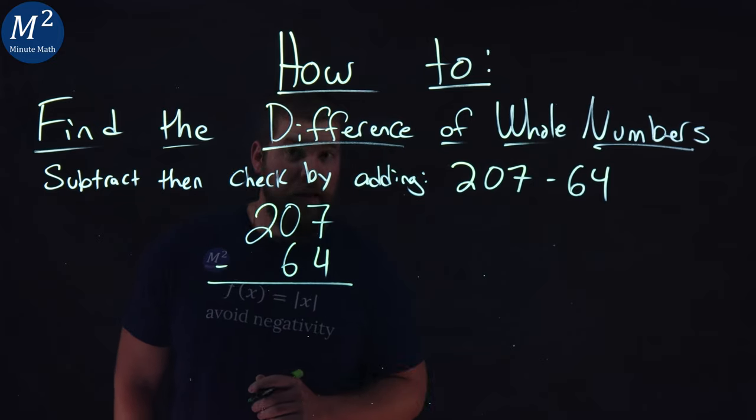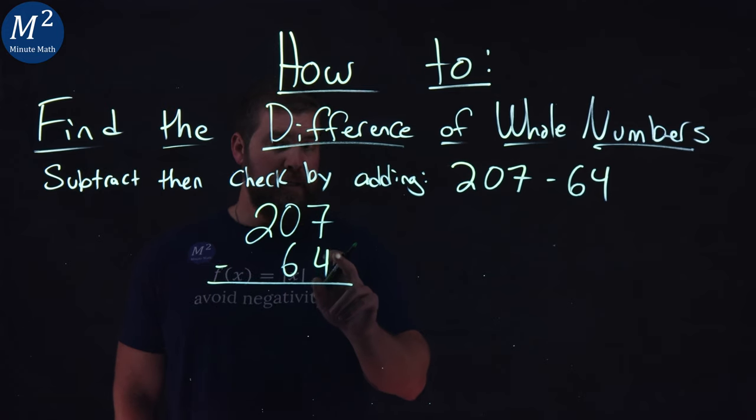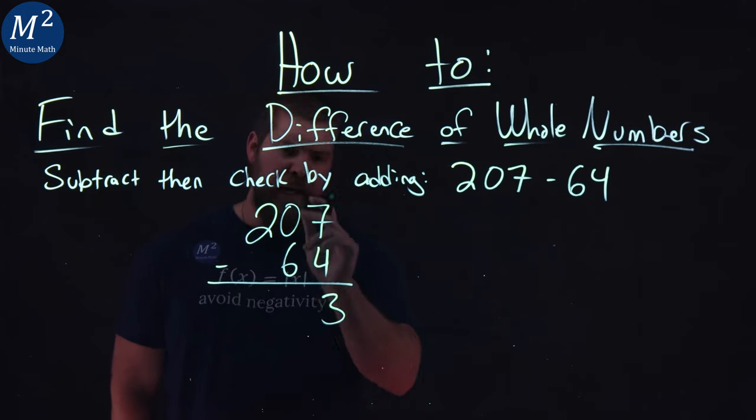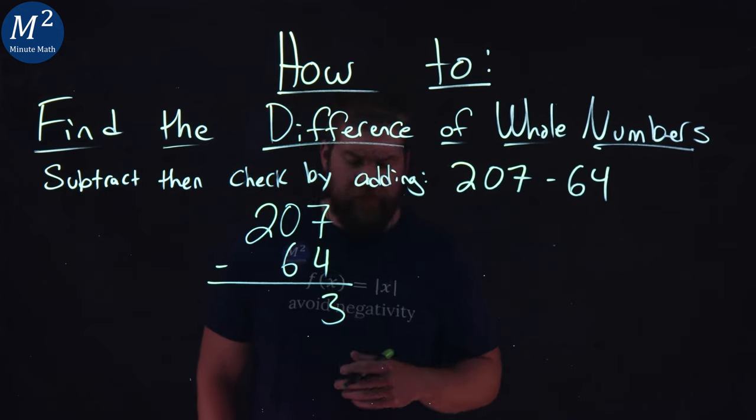Now we're going to subtract the two. Start with the ones place here. Seven minus four, pretty easy. Seven minus four gives me three. Next I have zero minus six. Can't really do that,